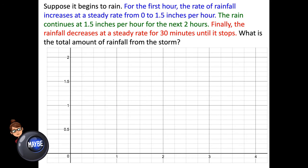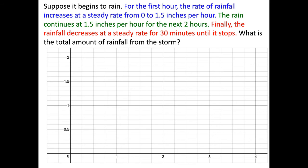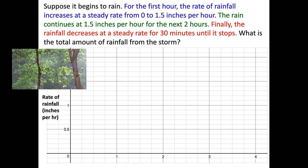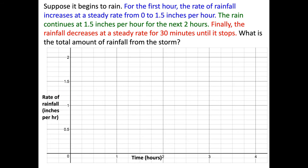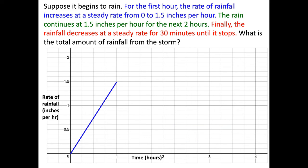Let's look at another example. Suppose it began to rain. Love the rain. And for the first hour, the rainfall increases at a steady rate from zero to 1.5 inches per hour. So let's get our graph going here. So the vertical axis is going to be rain and the input or horizontal axis is time.